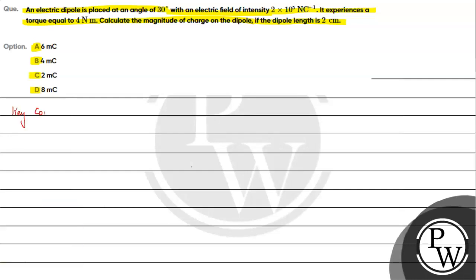For this question, the key concept we need to understand is the torque on an electric dipole placed in a uniform electric field. The expression for torque is given by τ = P × E (cross product). We can write it in terms of magnitude as PE sinθ, along with a unit vector to indicate the direction.